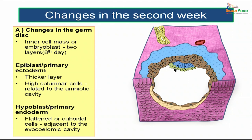The hypoblast is otherwise known as primary endoderm, made up of flattened cuboidal cells. These are adjacent to another cavity — the exocelomic cavity — which will become the yolk sac.